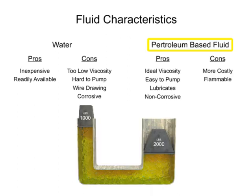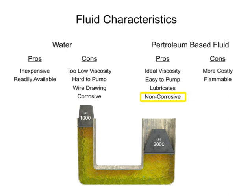Over time, petroleum-based hydraulic fluids have become much more cost-effective. It has a lower specific gravity than any other liquid and can be pumped with less power loss. It also lubricates as it works through the system and has little corrosive effects on metal machinery. Flammability is an issue, but with the development of synthetic oils, alternatives to water remain the preferred working fluid.